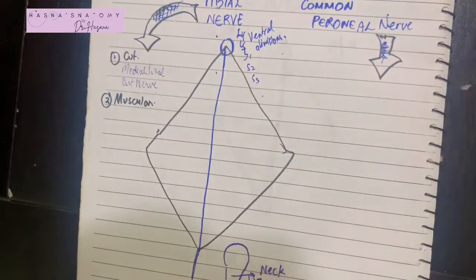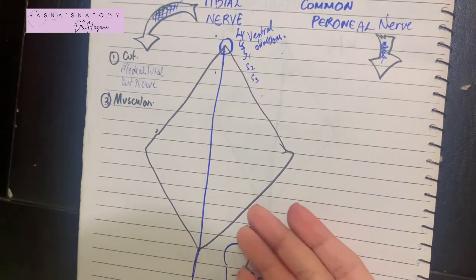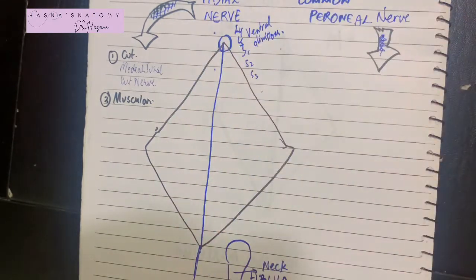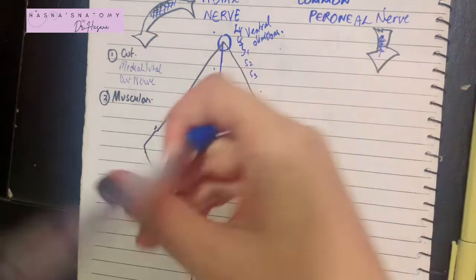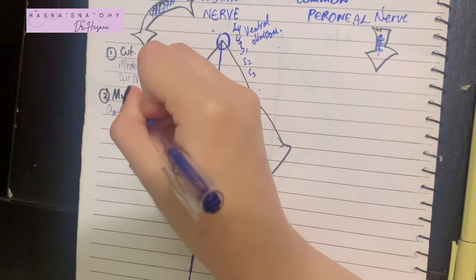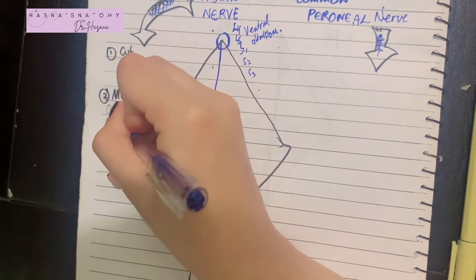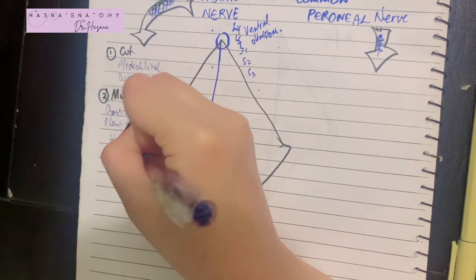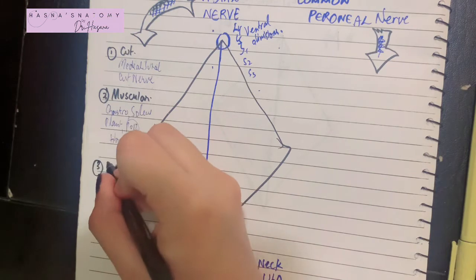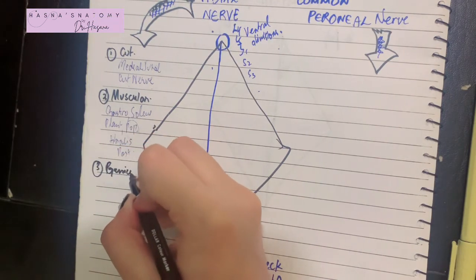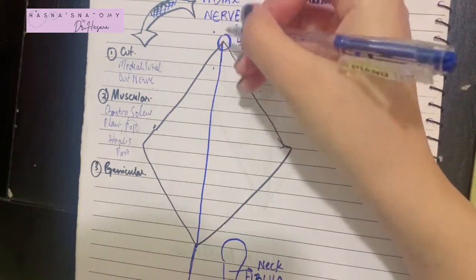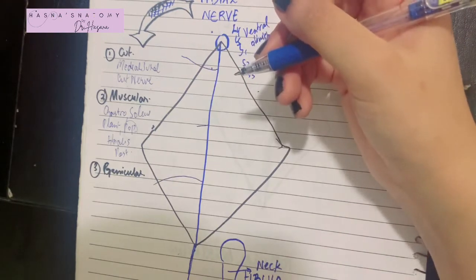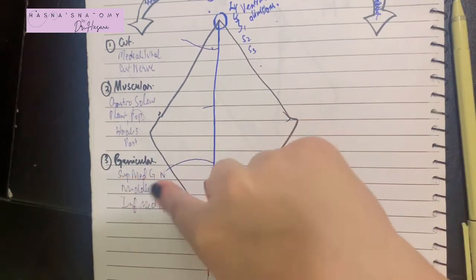The muscular branches of the tibial nerve supply the muscles of the leg, including the gastrocnemius, plantaris, soleus, and popliteus. The muscular branch to the popliteus will additionally supply the tibialis posterior. Finally, the tibial nerve gives genicular branches — specifically the superior medial genicular nerve, middle genicular nerve, and inferior medial genicular nerve. The middle genicular nerve is responsible for supplying the knee joint.